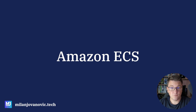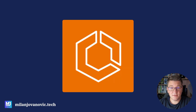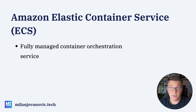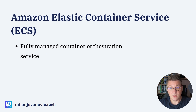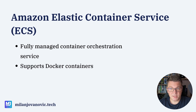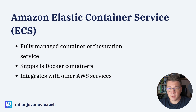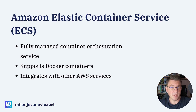Amazon ECS is short for Amazon Elastic Container Service. This is a fully managed container orchestration service in AWS. Because it's fully managed, it means that you don't have to do the work — AWS does the work for you, and you get a simple way to run your applications inside of Docker containers. ECS supports Docker containers, and it also integrates with many other AWS services, among other EC2, which is the actual compute instance that is going to be running your container instances.